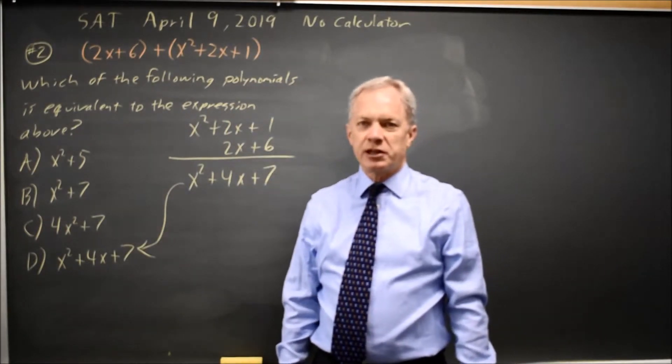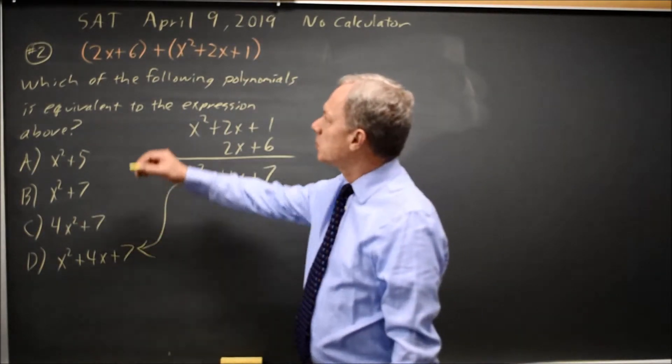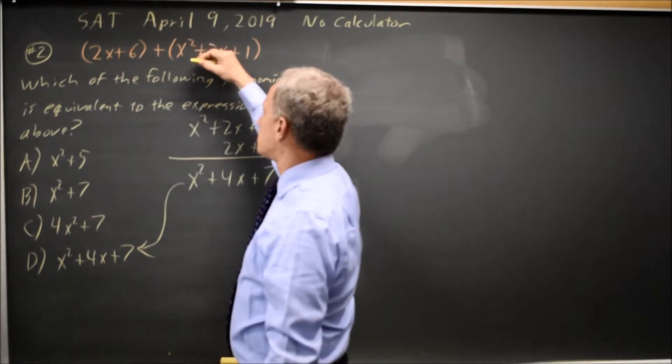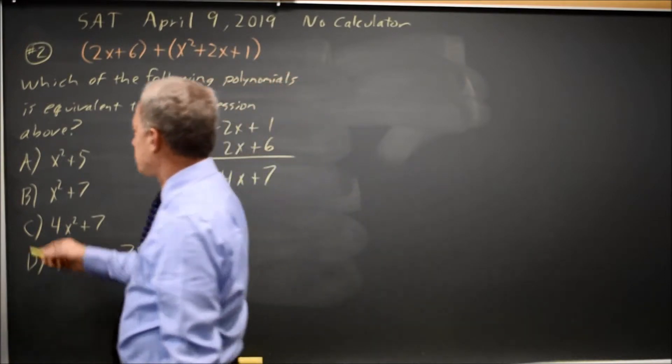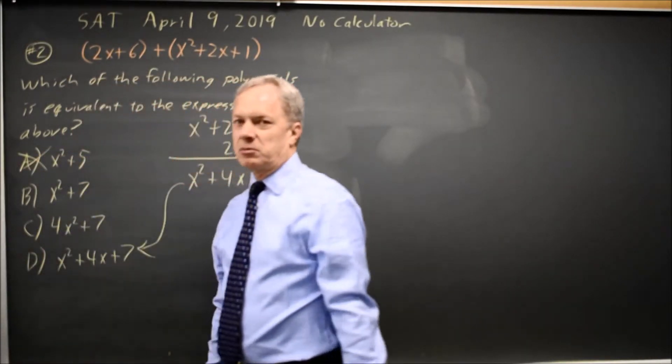Alternatively, you can try substituting in numbers like 0 and 1. At 0, this is 6. At 0, this is 1. 6 plus 1 is 7, which could be B, C, or D, but A is wrong. That didn't help much.